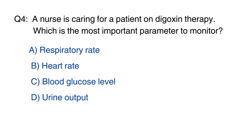Question number 4: A nurse is caring for a patient on digoxin therapy. What is the most important parameter to monitor? The right option is B, heart rate.